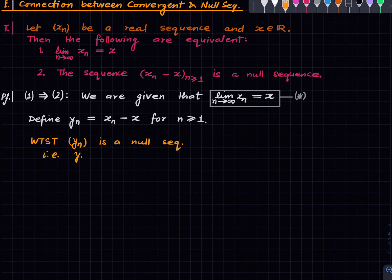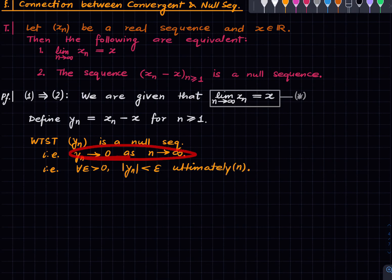This means exactly that yn converges to zero, but when we write this we read it as yn approaches zero as n approaches infinity. Which is to say that for all epsilon greater than zero, the absolute value of yn is less than epsilon ultimately. We just unravel the meaning of this. This is what we will show.